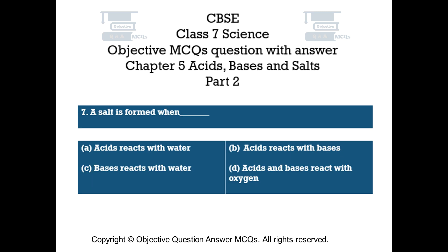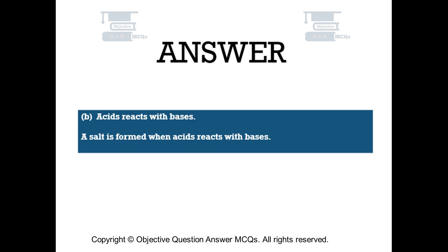Question number 7. A salt is formed when — Option A: acids react with water. Option B: acids react with bases. Option C: bases react with water. Option D: acids and bases react with oxygen. The right answer is option B — a salt is formed when acids react with bases.